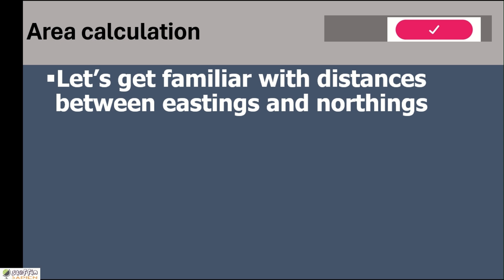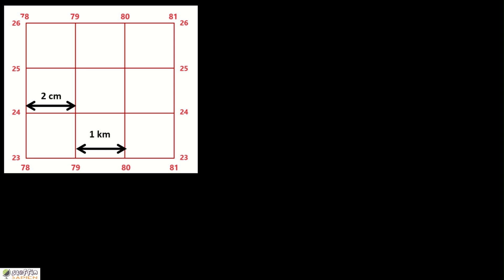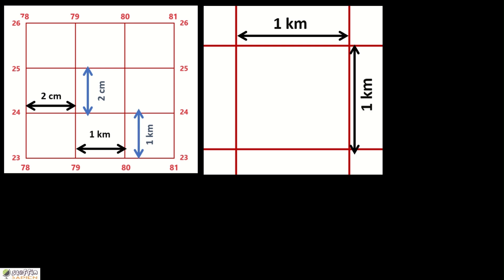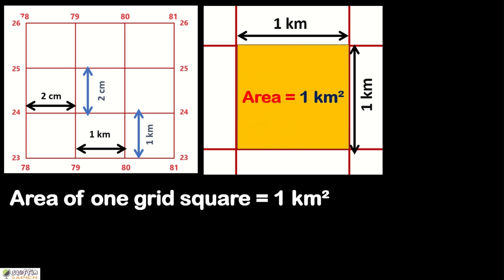Let's go to the next topic: calculation of area. Area calculation is done with the help of eastings and northings. The distance between two nearby eastings is always 2 centimeters on the map, which equals 1 kilometer on the ground. The same applies to northings. So one grid square represents an area of 1 square kilometer in reality — the area of one grid square is 1 km².